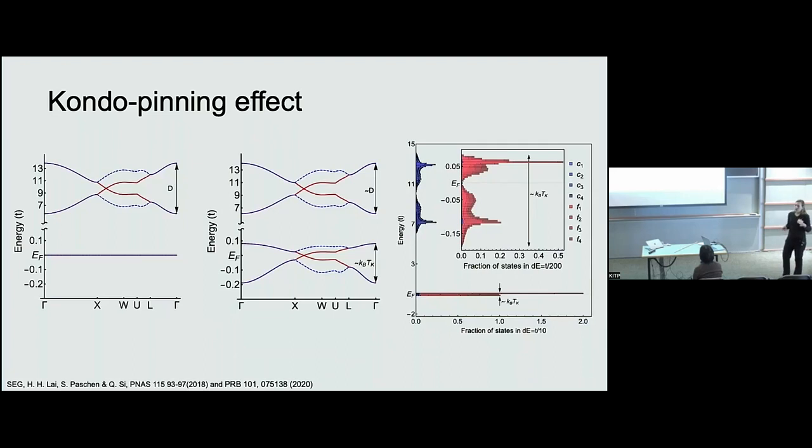So the consequence of having these highly renormalized bands pinned to the Fermi energy is that if I plot the density of states. So this y-axis is for the whole spectrum. You can see that the density of states is highly concentrated in the region of the Fermi energy.